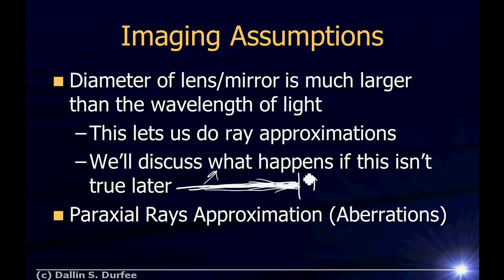With the paraxial ray approximation, we can do much simpler calculations. If you don't assume it, weird things happen. Spherical mirrors do not make images perfectly. If your system is not designed to only use paraxial rays, you get something known as aberrations — meaning your image doesn't focus exactly properly. Images get distorted and fuzzy. If you're designing a camera or a telescope, you have to correct for those aberrations, but in the paraxial ray approximation we don't have to worry about them.